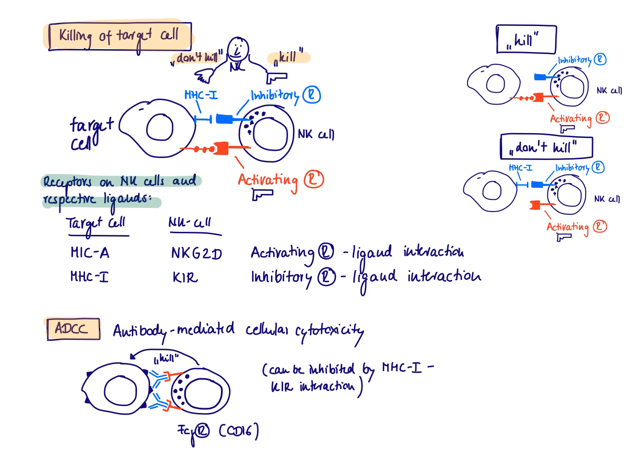This is just another way to have an activating receptor-ligand interaction via the FC-gamma receptor and the antibodies that are bound to antigens on the target cells. Just know that this can be inhibited by MHC class 1 inhibitory receptor interaction. So this pair, the FC-gamma receptor with the antibody bound to the antigen on the target cell, is just a specific way of an activating receptor-ligand interaction that drives NK cell killing. This concludes the video on NK cell and its function, particularly focusing on inhibitory and activating receptors on the NK cell.